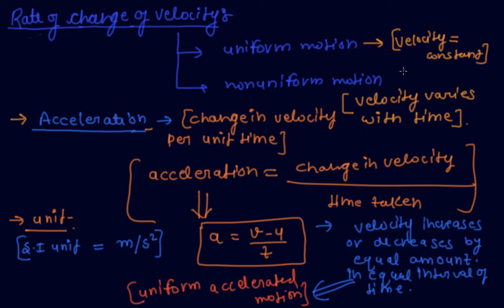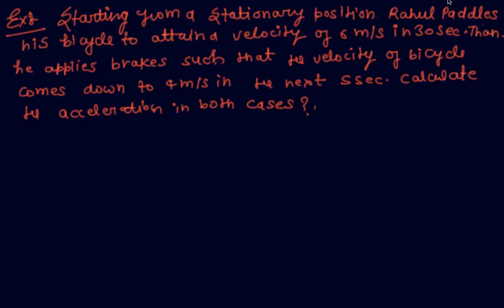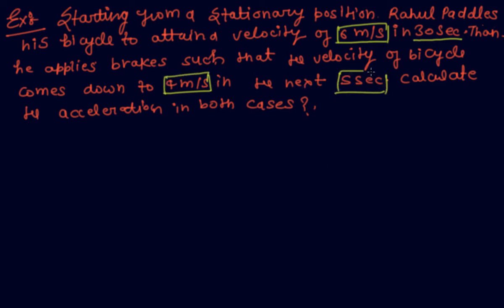Now I take an example on acceleration. Starting from a stationary position, Rahul pedals his bicycle to attain a velocity of 6 meters per second in 30 seconds. Then he applies brakes such that the velocity of the bicycle comes down to 4 meters per second in the next 5 seconds. Calculate the acceleration in both cases.